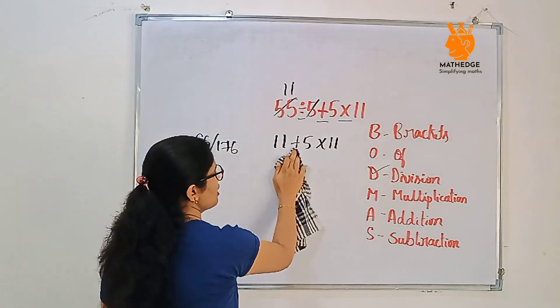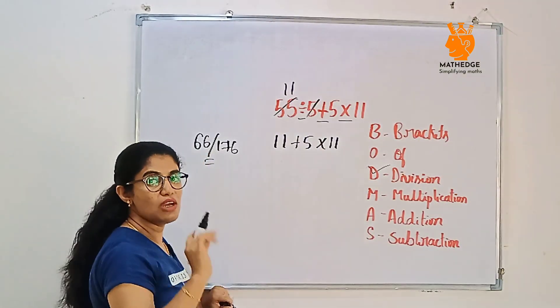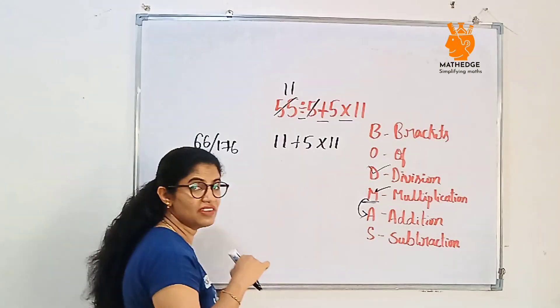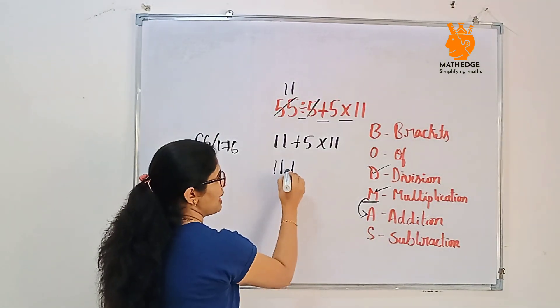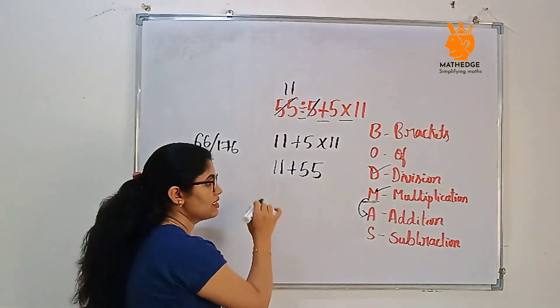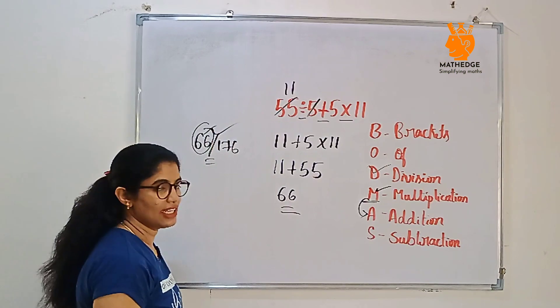What is the correct way to do? Here, if you observe, we have addition and multiplication. But according to BODMAS, first we should do multiplication, then after that addition. So first we will do multiplication. Keep 11 as it is. 5×11 is 55, then addition symbol is there. We will add this. So 66 is our right answer.